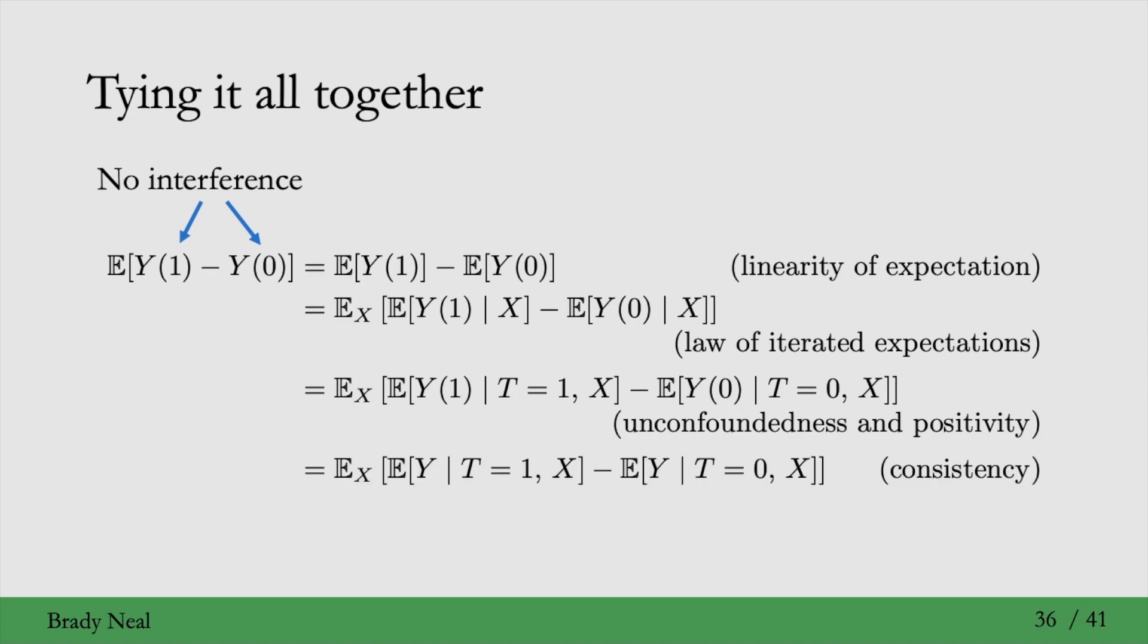And finally, we use consistency. We were using this a lot throughout the lecture without saying it was consistency. Now we're going to make it clear that this is where we actually apply consistency to say that the potential outcome Y(t), given capital T equals little t, is equal to the observed outcome given capital T equals little t.